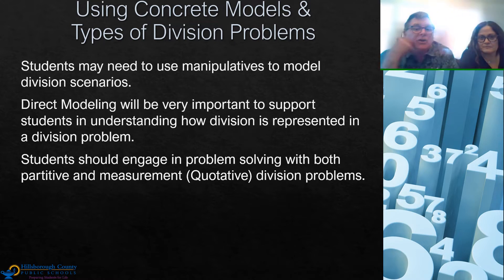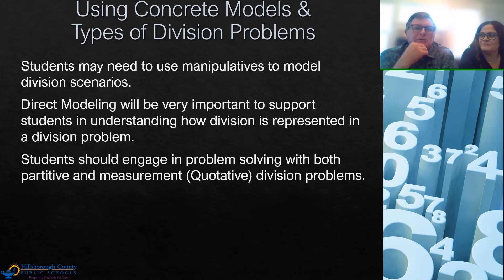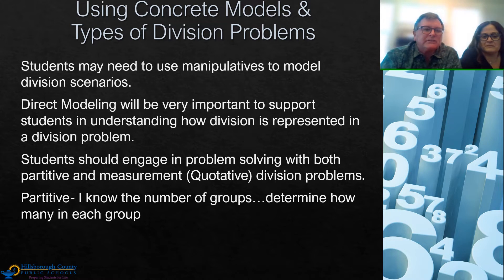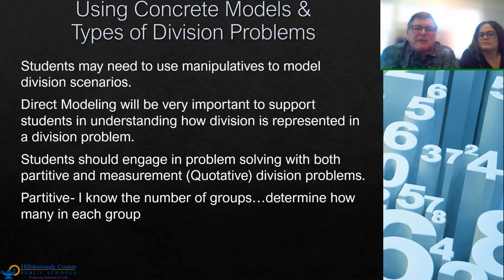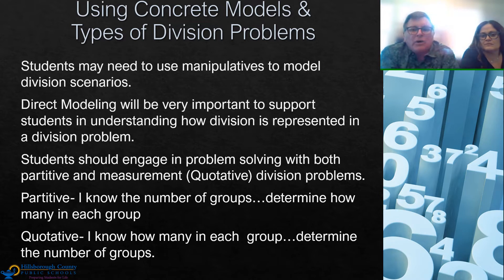There are two types of division problems — this is content knowledge that students should engage in to make sense of division. One is called partitive and the other is called measurement, or sometimes labeled as quotative division. A partitive is like partitioning — I know the number of groups. If you think about the cupcake problem, I knew there were three plates. Those plates are the groups, and you're trying to determine how many cupcakes go on each plate. The second type, quotative or measurement, is where I know the size of the group, like in the cookie problem.